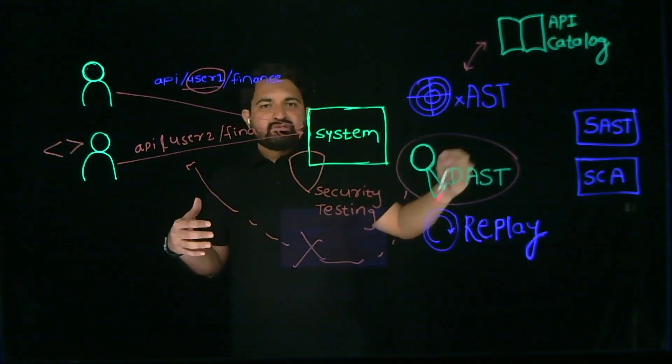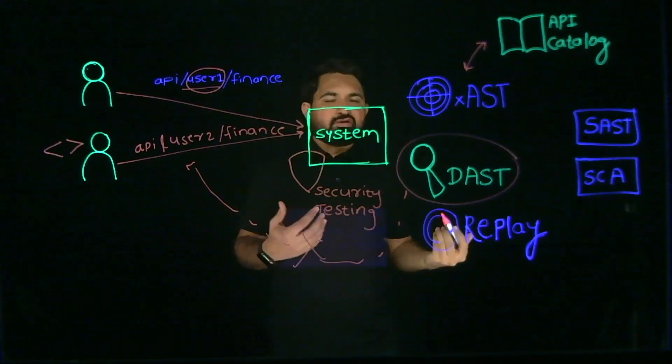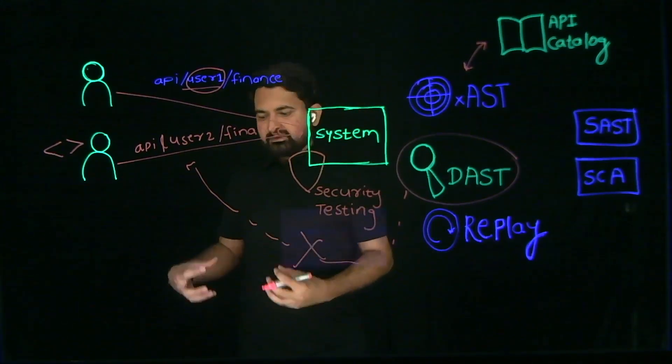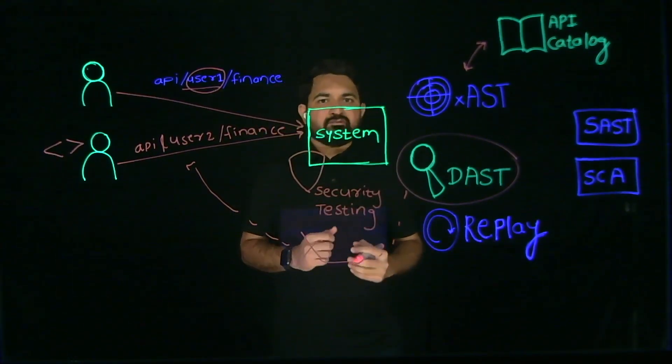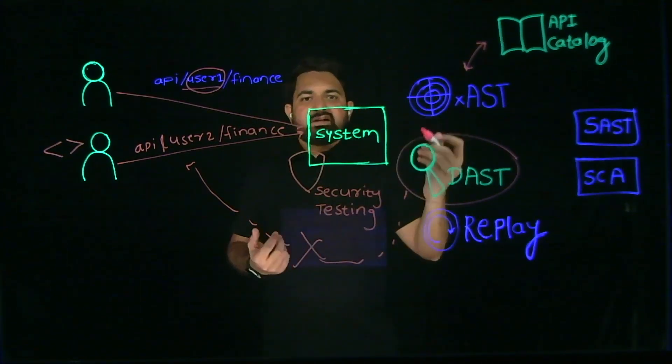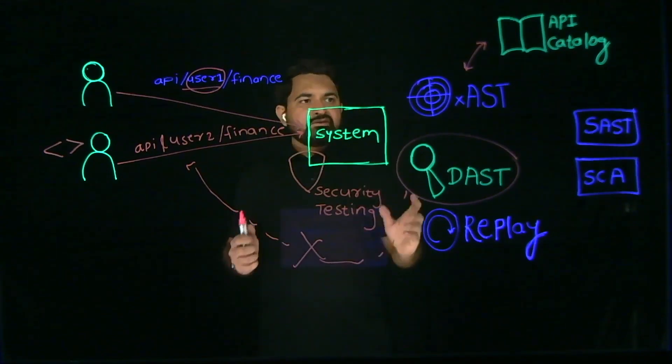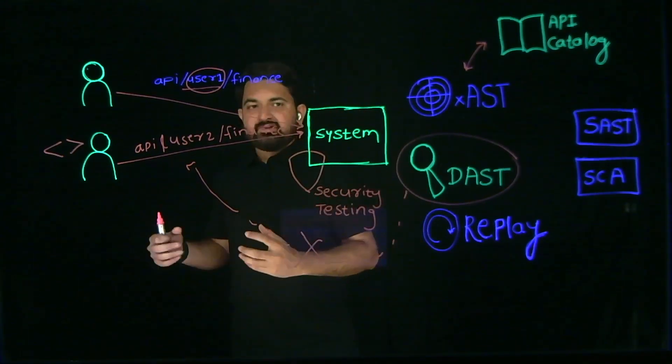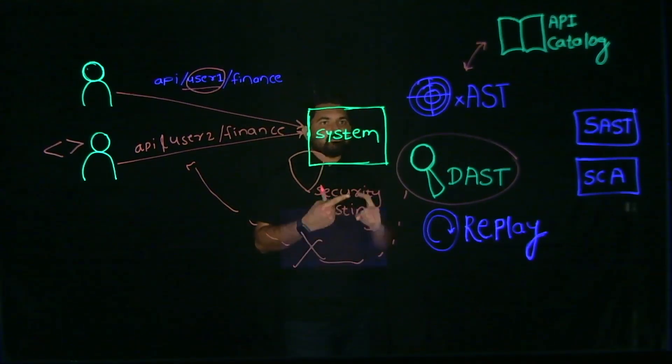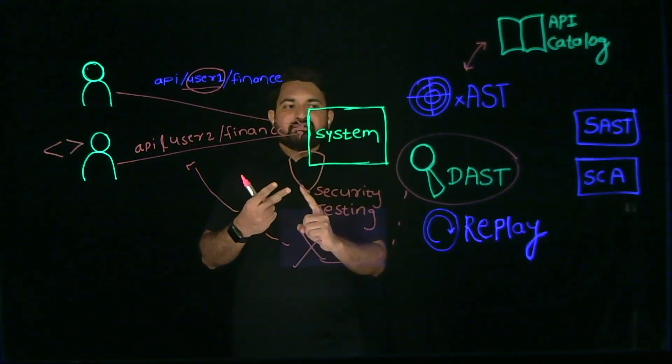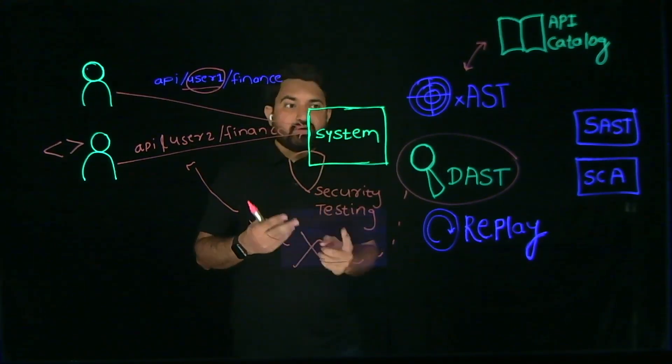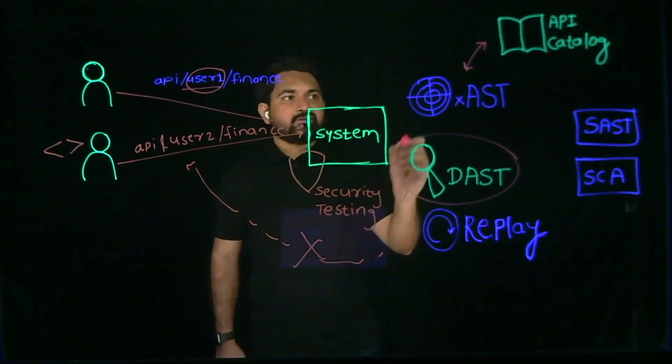Using the continuous learning process which API catalog uses, Traceable XAST acts smarter and more effectively in most cases. It's like a radar which is always aware and understands the context. With this understanding, XAST can now catch BOLA because it understands user attributions. It understands the data which users can access or not, which was not the case with DAST.